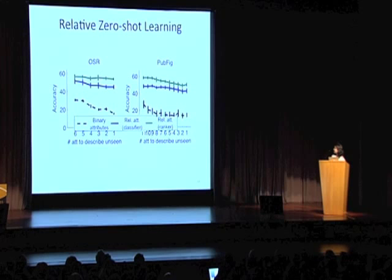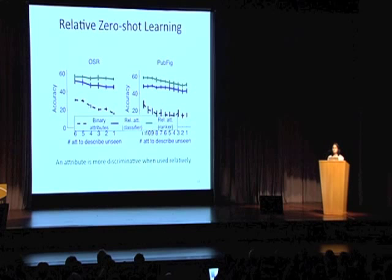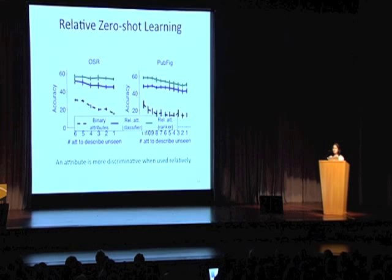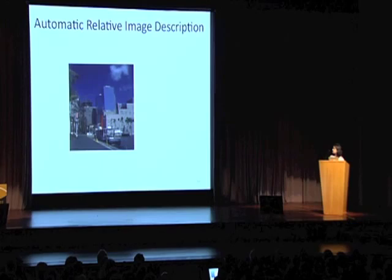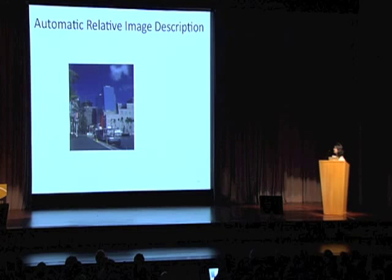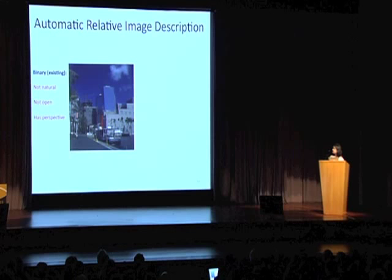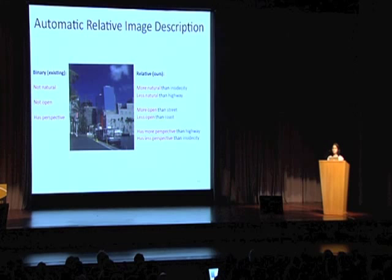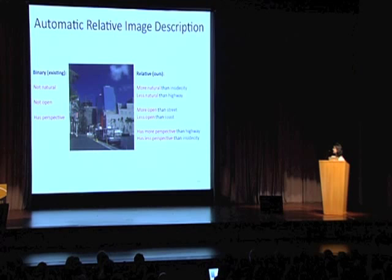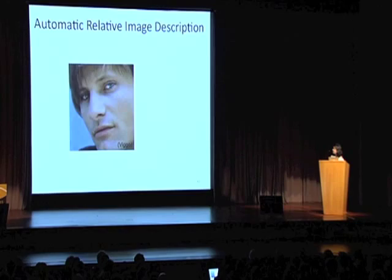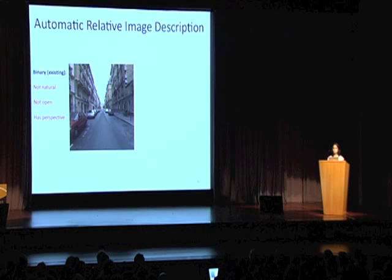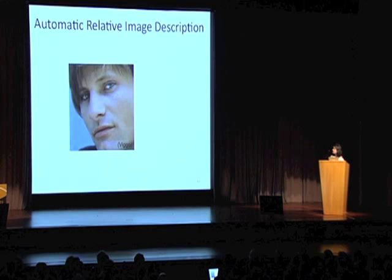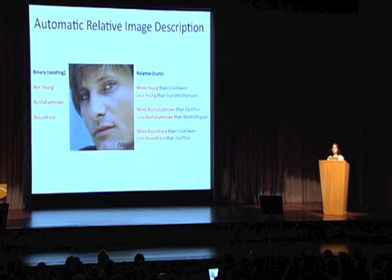Looking at image description examples: for one image, the binary description says 'not natural, not open, has perspective', while the relative description says 'more natural than inside city but less natural than highway; more open than street but less open than coast'. Interestingly, another image has the exact same binary description as the first, whereas the relative description is in fact different. We can also describe people relative to other people — if you were trying to describe a celebrity whose name you forgot, you're more likely to describe them relative to celebrities you know.